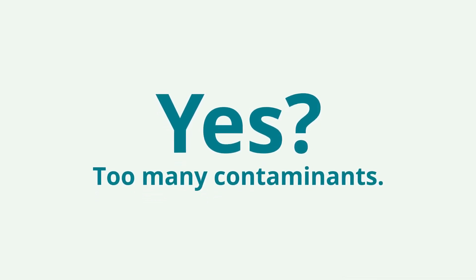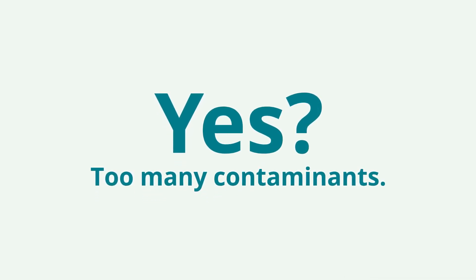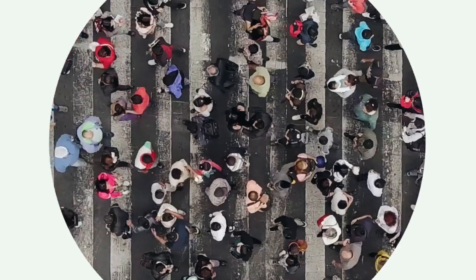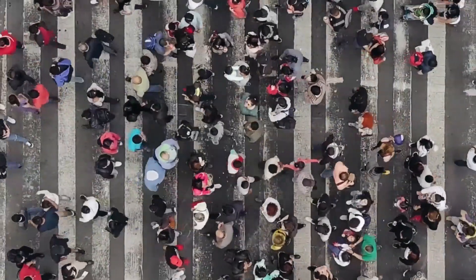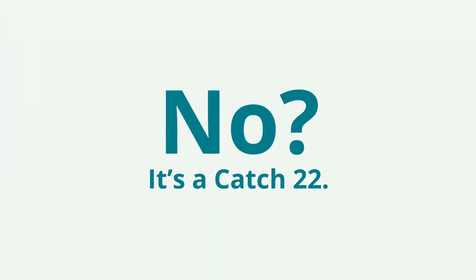If yes, then you're getting enough of the omegas, but the authorities will tell you that you're at risk of digesting too many environmental contaminants. If your answer is no, then you are most likely one of the 6.3 billion with a deficit. It's a catch-22.